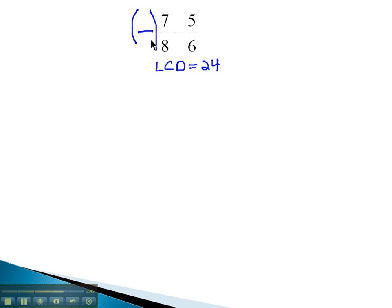So what do we have to multiply the 8 by to get 24? 8 times 3 is 24. Multiplying by 3 in the numerator and denominator gives us 21 over 24. This should be a plus. Let's make this addition.